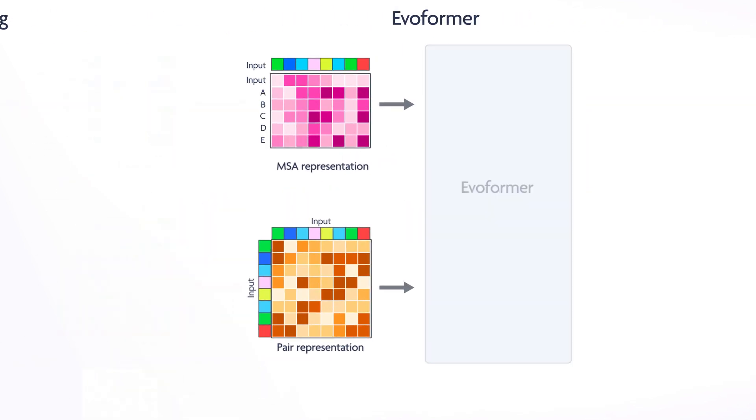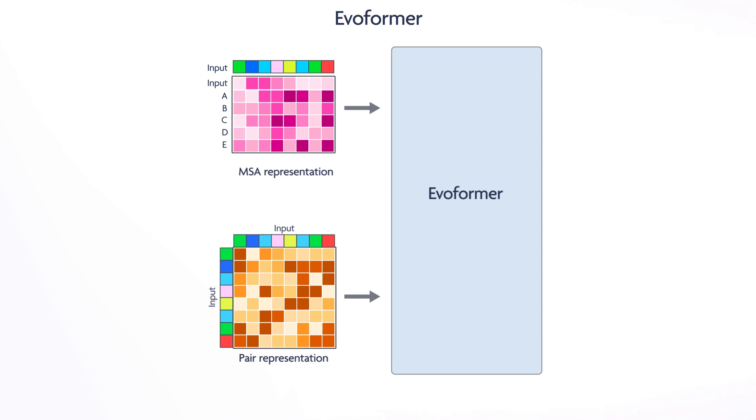From here, we can move on to Section 2, the Evoformer. The Evoformer is a neural network unique to AlphaFold. It consists of two towers that can communicate information to each other.